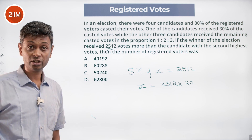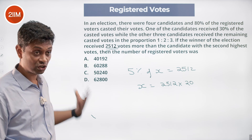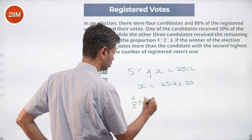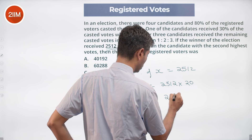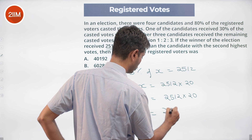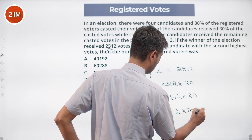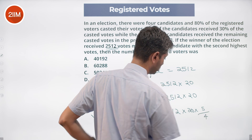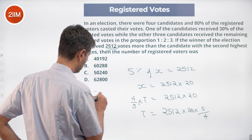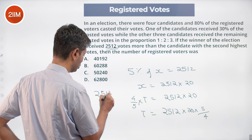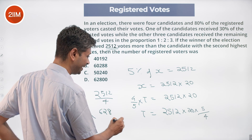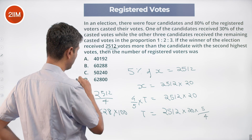We want the total number of registered voters. 80% of the registered voters is X, so 4/5 of total registered voters equals 2512 into 20. Total registered voters equals 2512 into 20 into 5/4. Since 20 into 5 is 100, this becomes 2512 divided by 4, multiplied by 100. 2512 divided by 4 is 628, so total registered voters equals 62800.